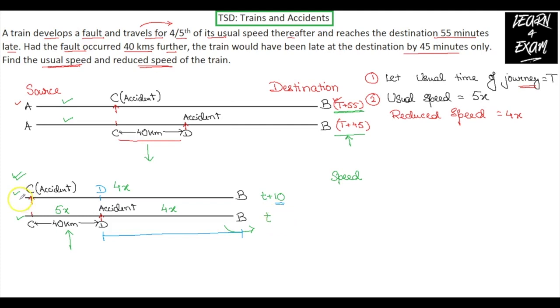So, if you look closely, in the first case, the train travels with a speed of 4x from C to D, whereas in the second, it travels with a speed of 5x. Since the speed reduces, the time taken is greater. So, let us just consider now from C to D.